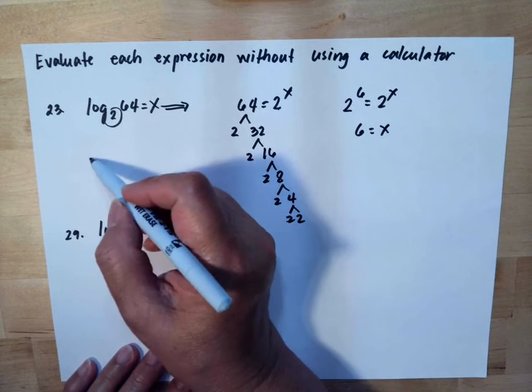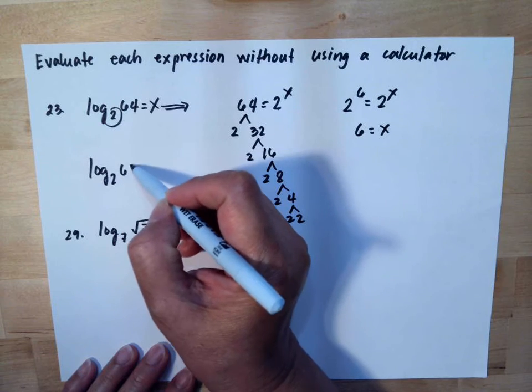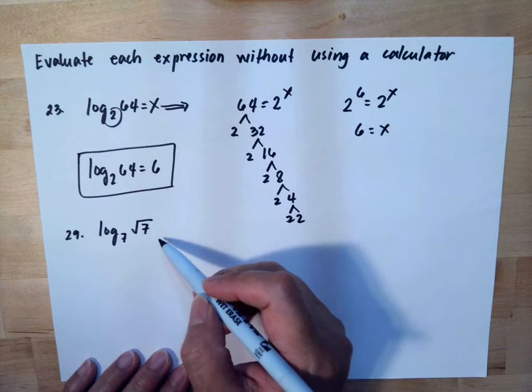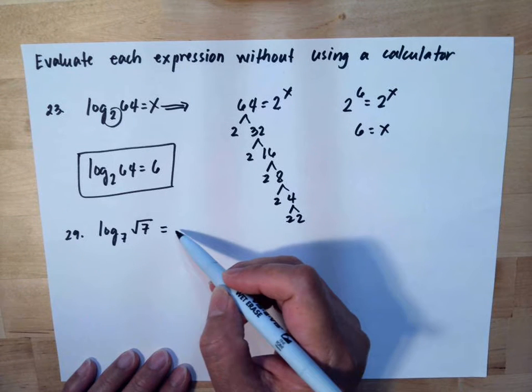So meaning log base 2 of 64 is equal to 6.